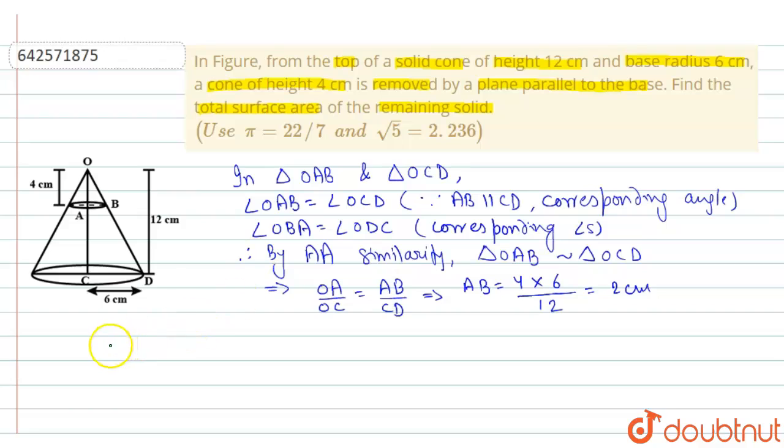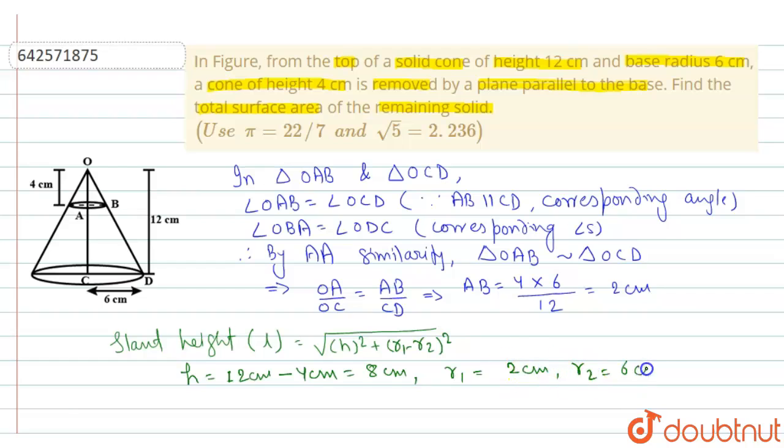Now we will obtain the slant height for the first term which is represented by L, and the formula for that is square root of H square plus (R1 minus R2) square. Now H is equal to 12 cm minus 4 cm, that is 8 cm. R1 is equal to 2 cm, and R2 is equal to 6 cm.